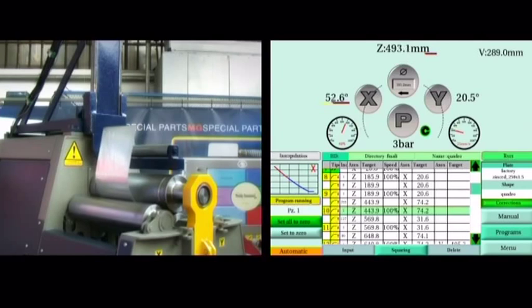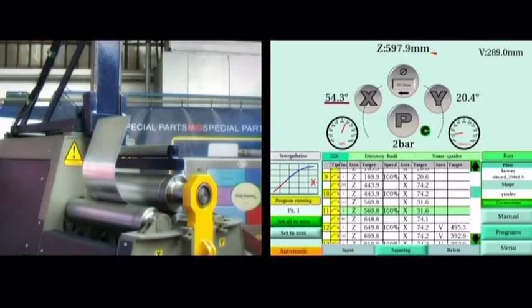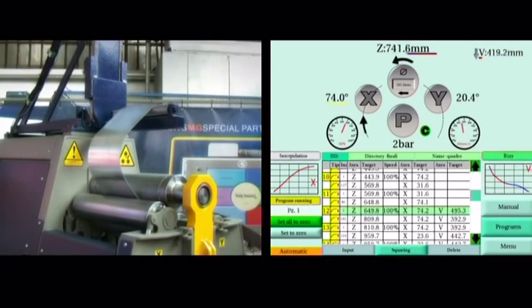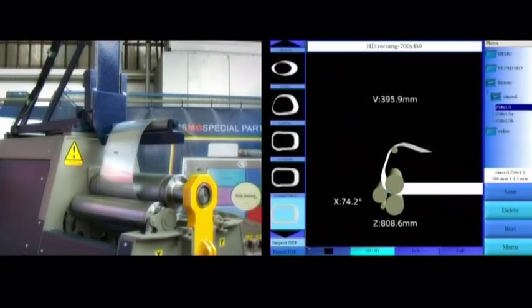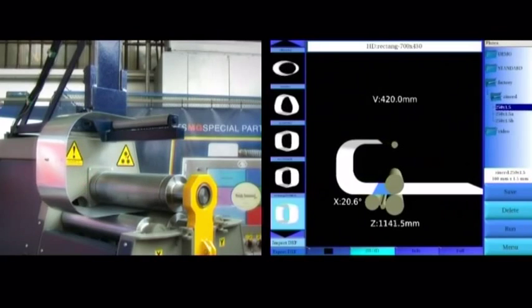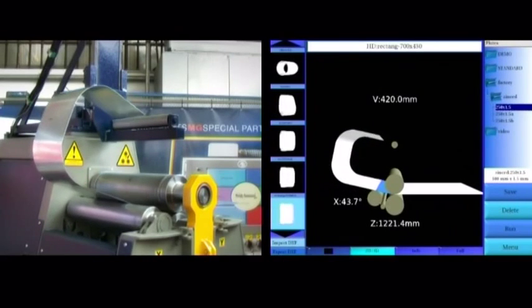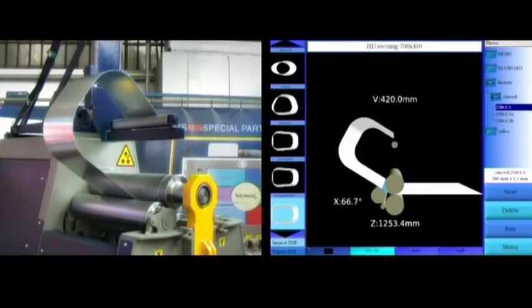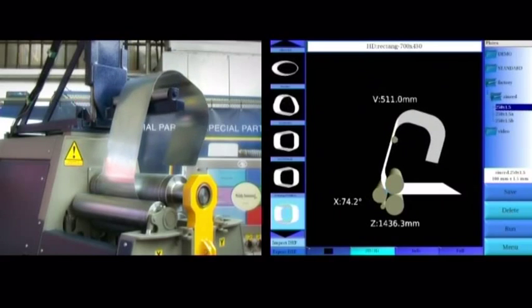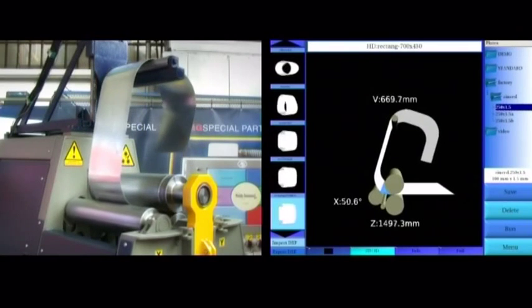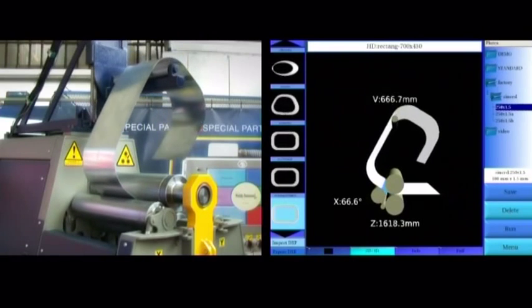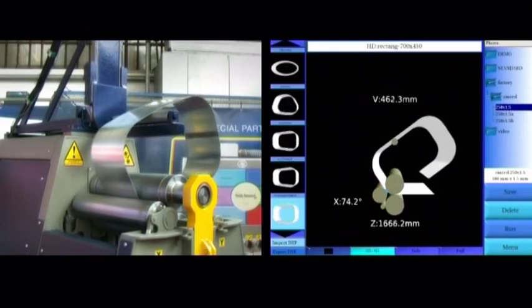During the execution, the program line currently selected, the calculated and actual interpolation trajectories are displayed on the screen, so that it's possible to constantly check the accuracy of the movements.